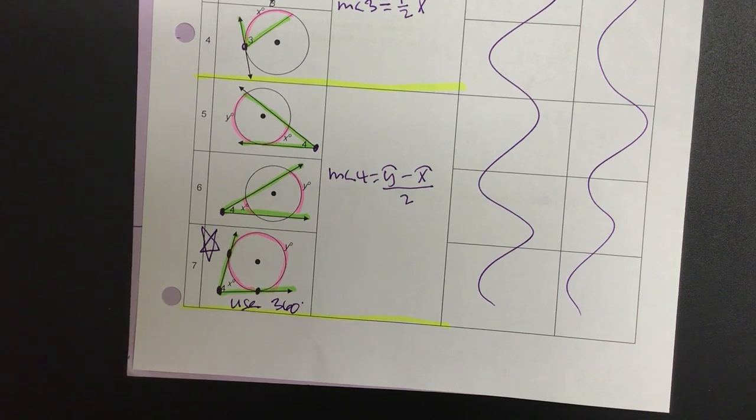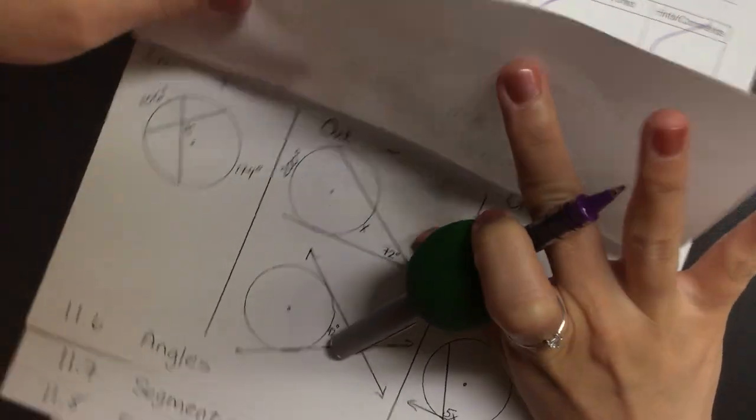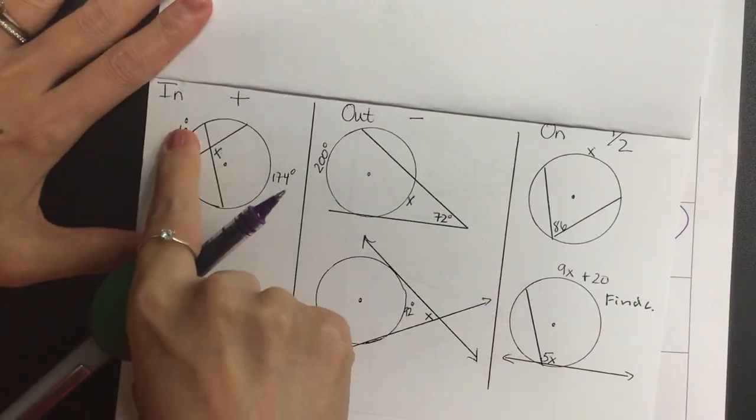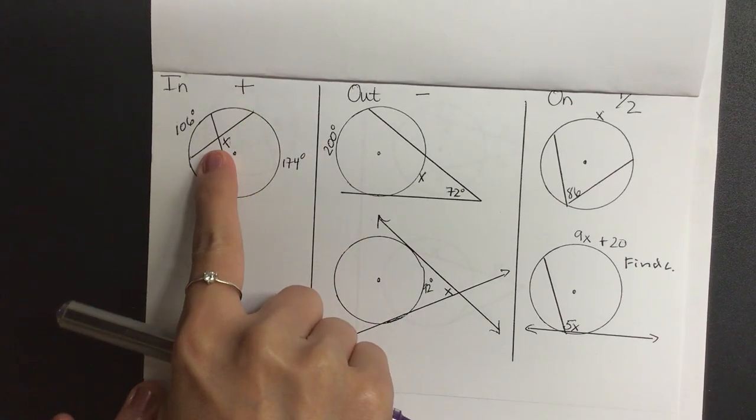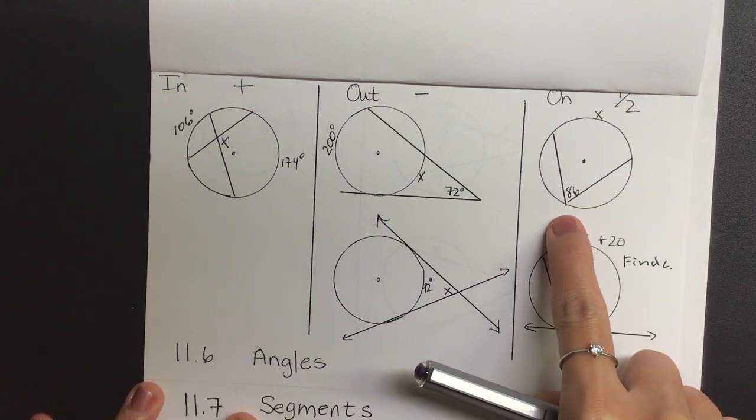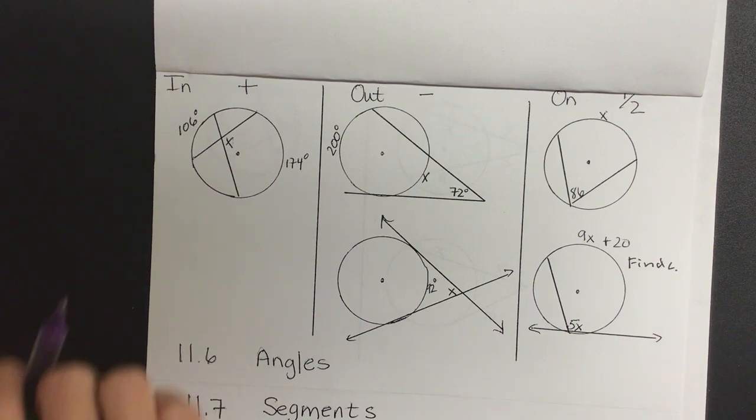Now go to your foldable. On your foldable, I want you to turn to the first page. And when you fold it upward, you should ideally, unless I messed up, see In, Out, and On. Basically, easy way to remember: if the angle is inside you add, if it's on the outside you subtract, if it is on, it's half of it.